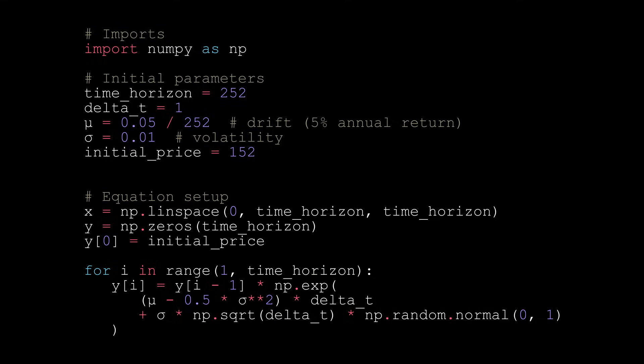Finally, we iterate from 1 to the time horizon, updating the next value in our data using our Brownian motion update equation. This will give us just one sample path using the parameters we've defined above.